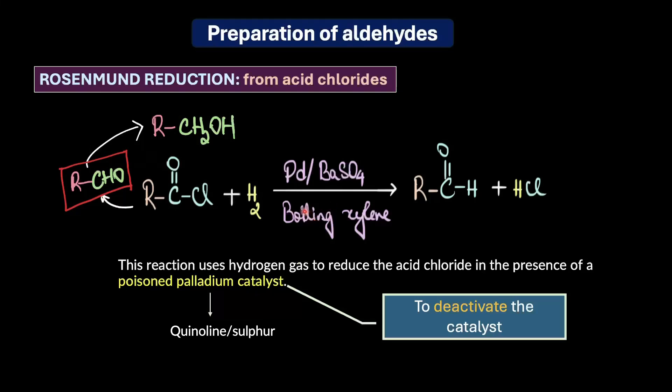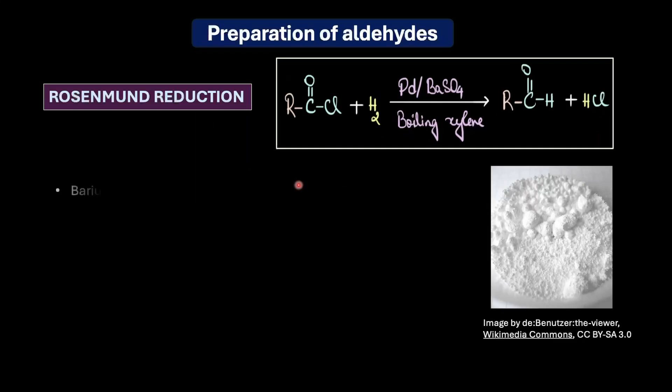One way is to use barium sulfate as a support material for palladium, and this physically limits its reactivity. Barium sulfate is a crystalline solid with a very low surface area. In contrast, highly active catalysts typically tend to have a higher surface area to provide more sites for reaction to occur.